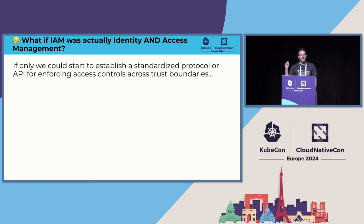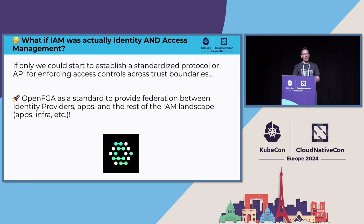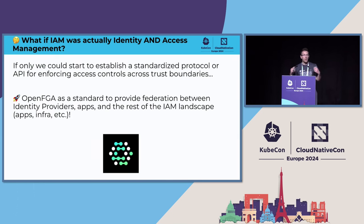I'd like to pose a question to the community: what if identity and access management was actually identity AND access management — really emphasizing the 'and'? If only we could establish some standards or protocols, maybe APIs for enforcing access controls across trust boundaries — this federation that we're talking about. I think OpenFGA is a project which can really start to bridge this gap between identity providers, applications, infrastructure, and our whole stack. Authorization and access controls are everywhere.